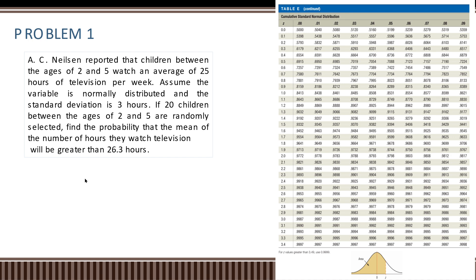The formula we are going to use is z equals the sample mean minus mu, over the standard deviation divided by the square root of n. We use this formula because the problem is finding the probability of the mean of the number of hours, not the individual data. We are talking about the mean of hours watched being greater than 26.3.